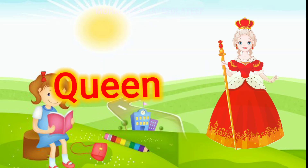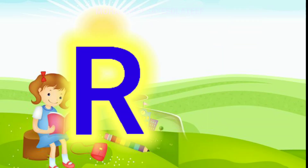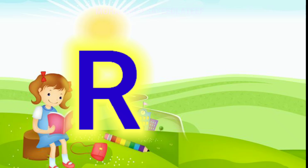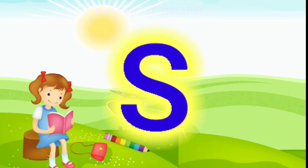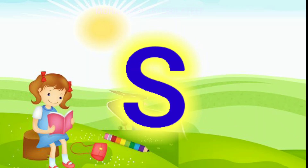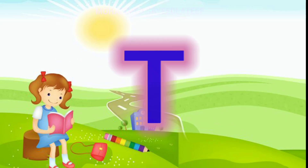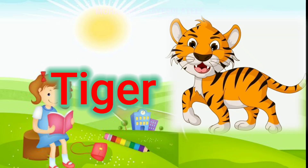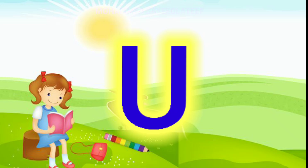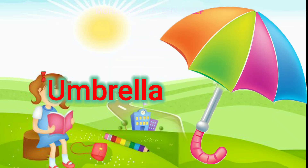Q for queen, R for rabbit, S for sheep, T for tiger, U for umbrella.